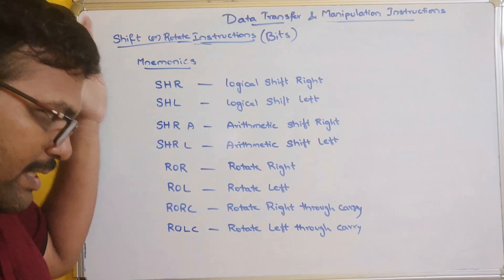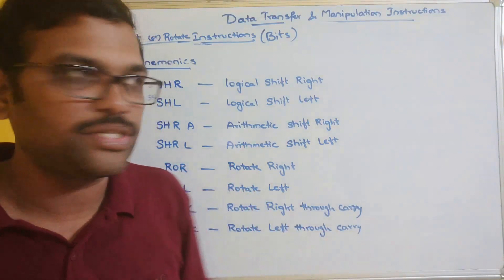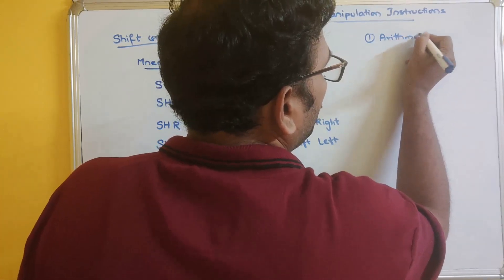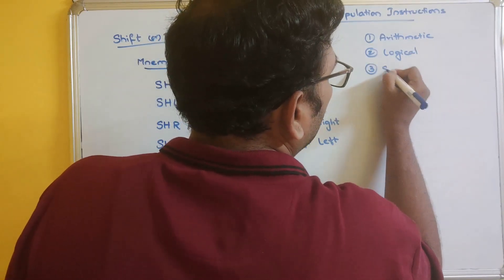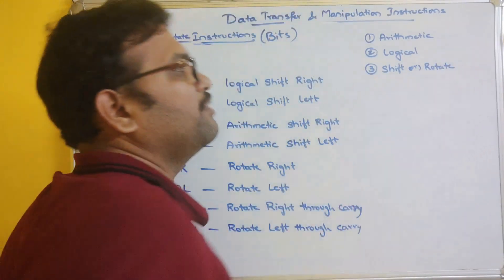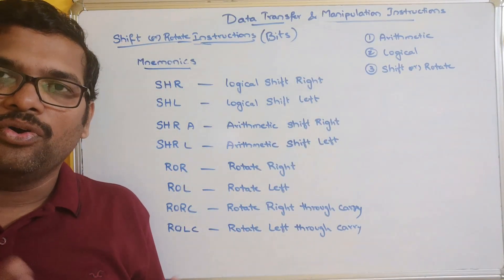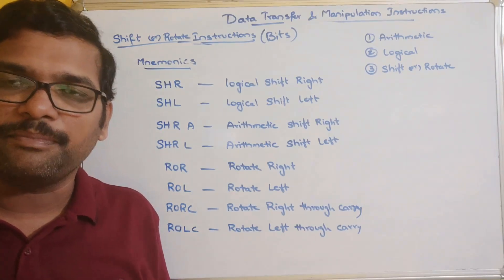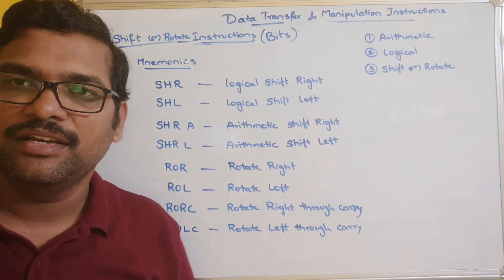All three categories come under data transfer and manipulation instructions: the first is arithmetic, the second is logical, and the third is shift or rotate. These are the different categories of data transfer and manipulation instructions. Hope you understood this. If you really enjoyed my session, like, share with your friends, and don't forget to subscribe to our channel. Thanks for watching.